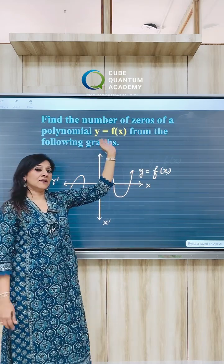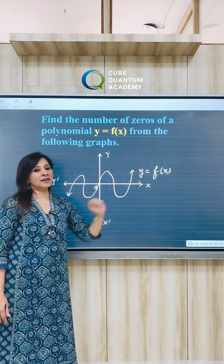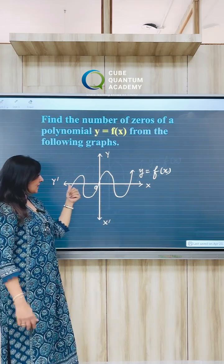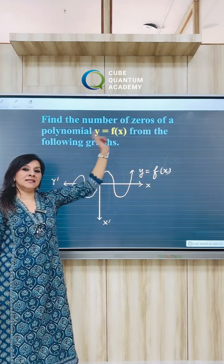And to find out the number of zeros of such polynomials, we will see that they are on the x-axis of how many points intersects. And each point of intersection represents the zero of this polynomial.